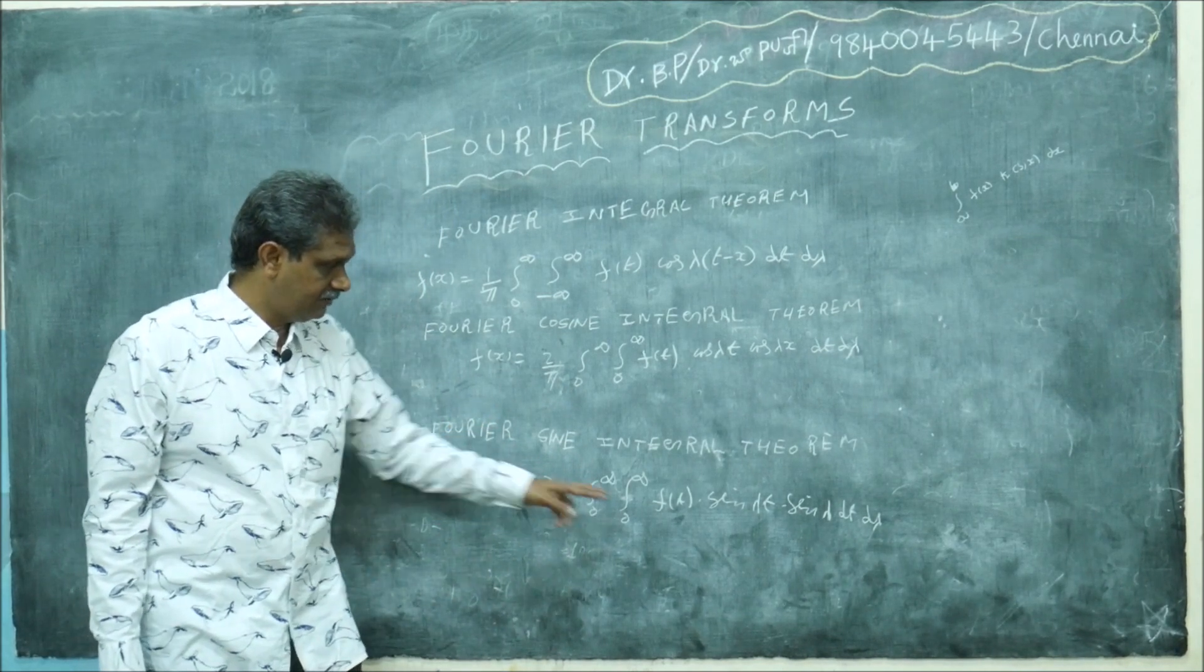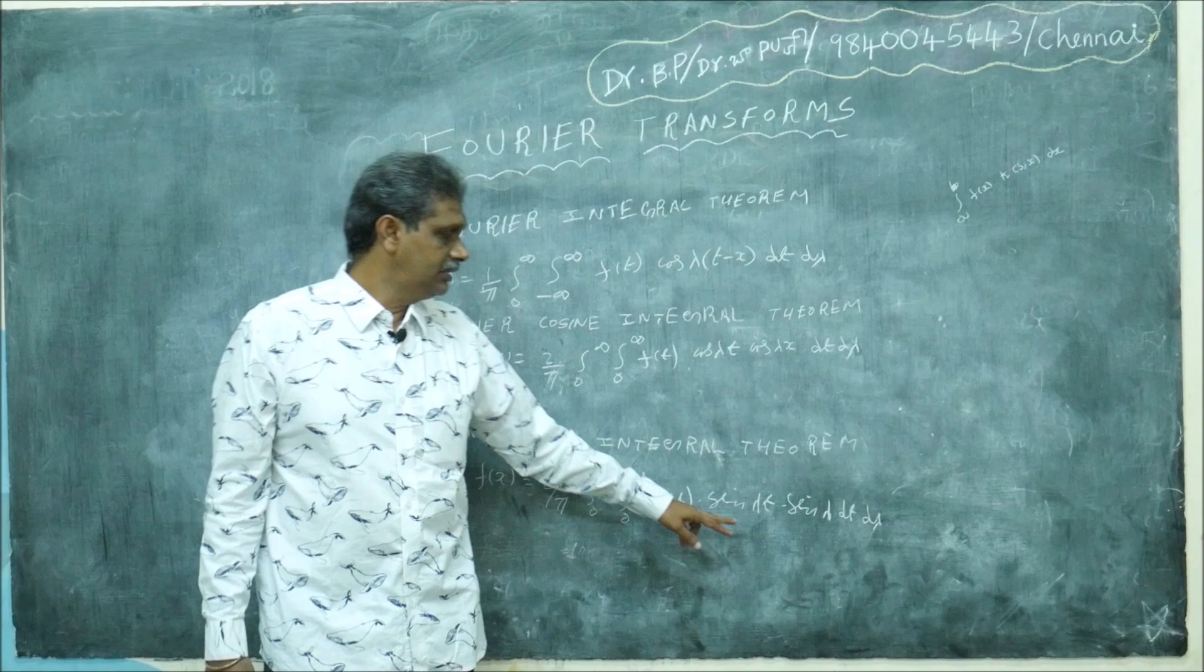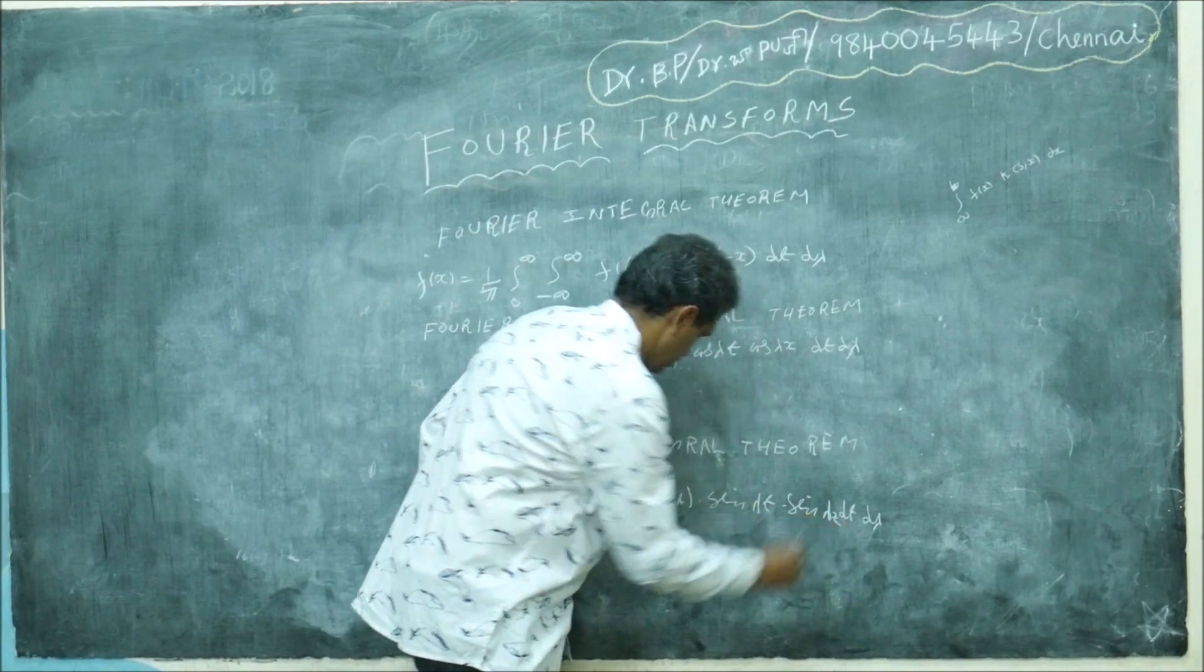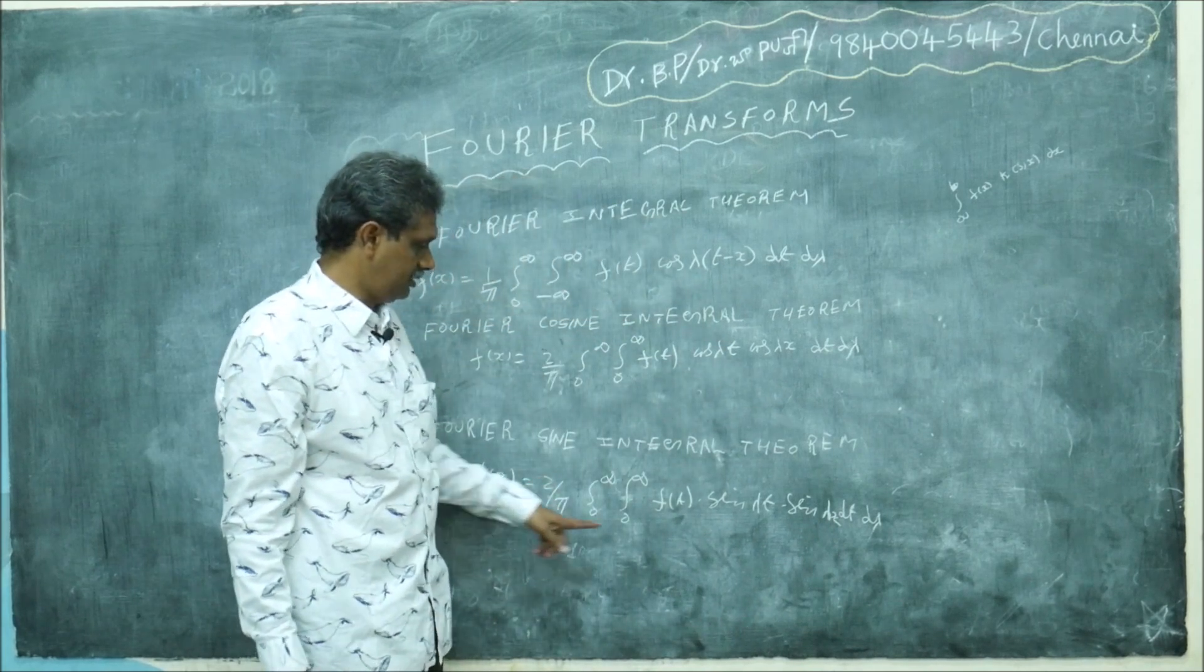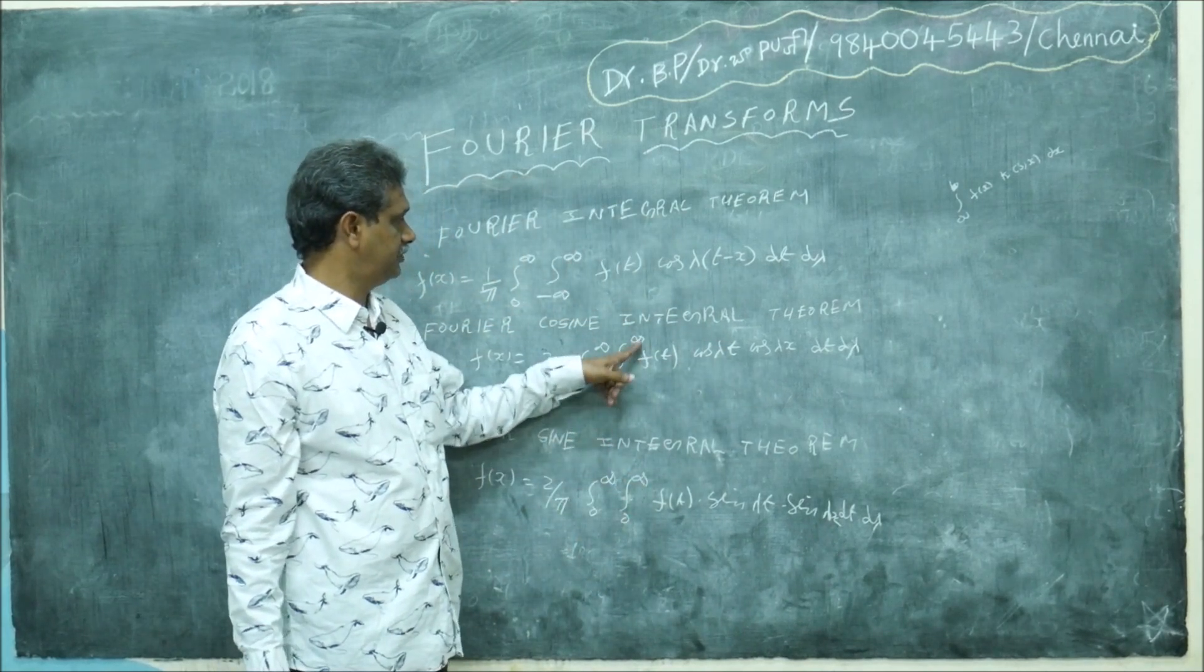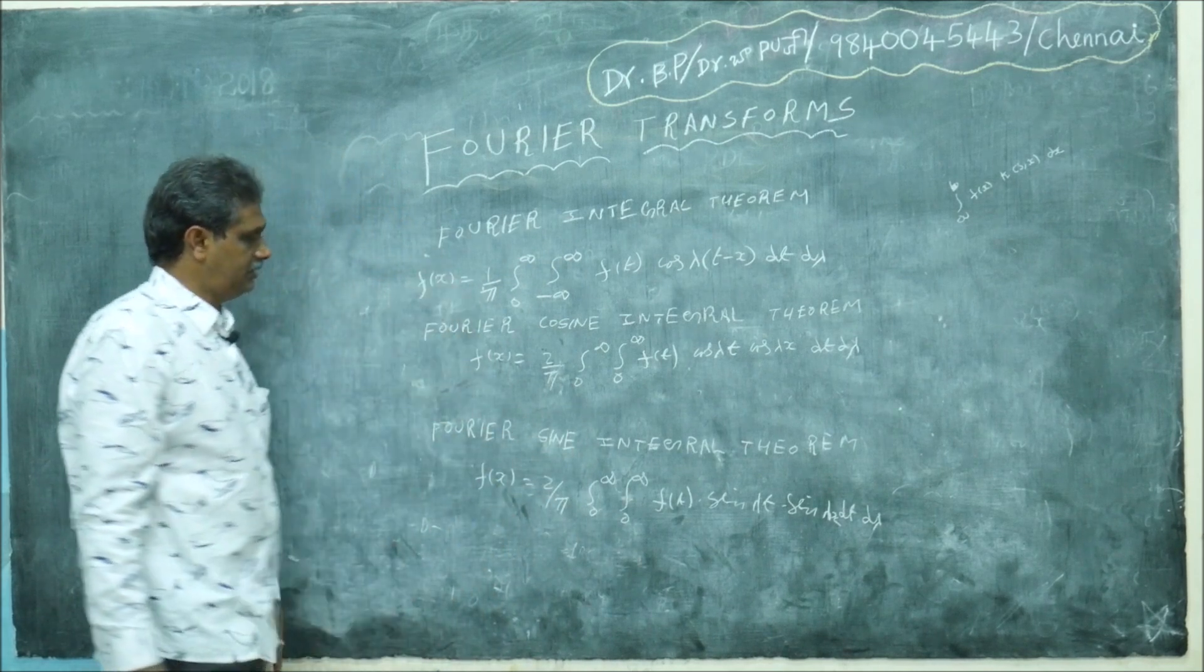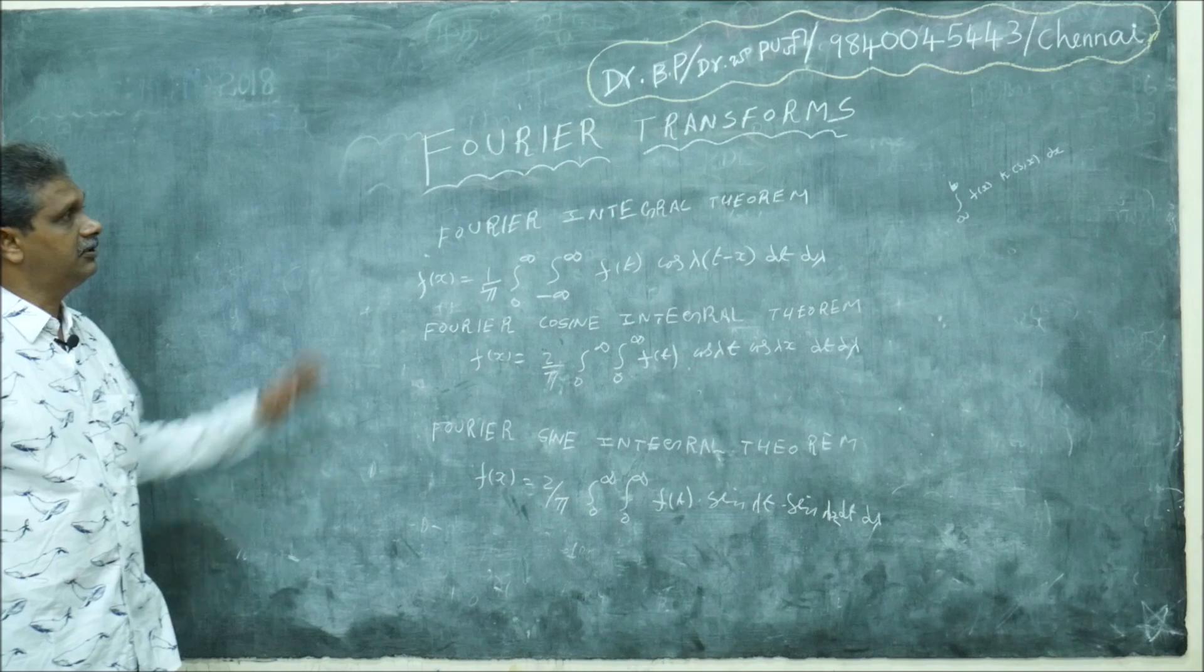Similarly, suppose f(t) is an odd function—that is, f(t) is odd—then only the sine term stands. This is sin(λx). Then you can also write 2/π, because 0 to infinity will come. You can remember these formulas—I'm not doing anything this time, just jumping into Fourier transforms.